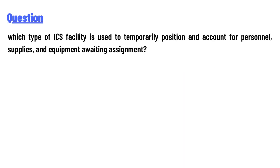Which type of ICS facility is used to properly position and account for personnel, supplies, and equipment awaiting assignment? The answer to the question is: staging area.